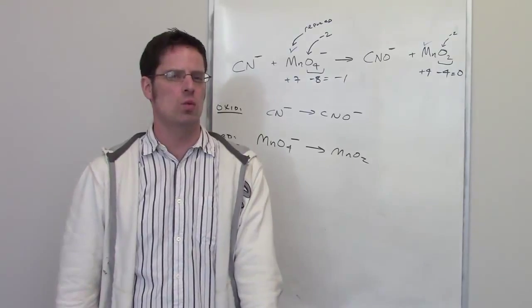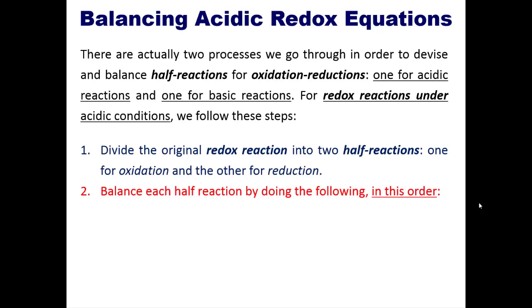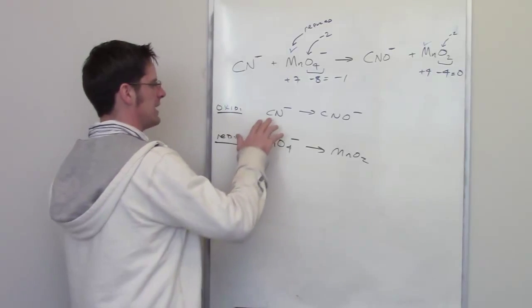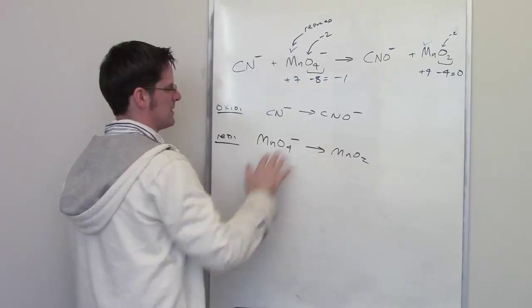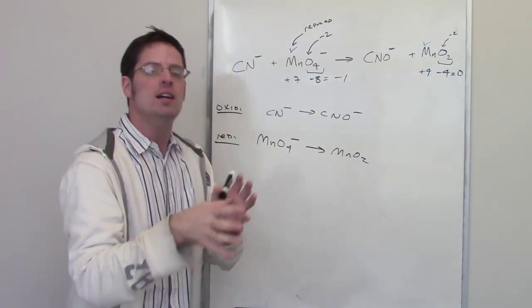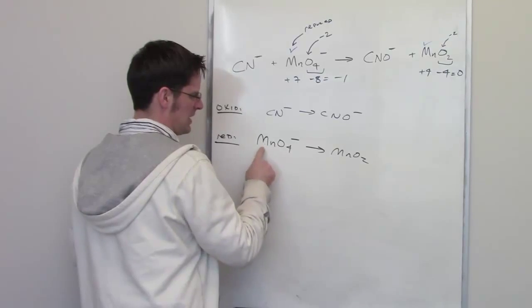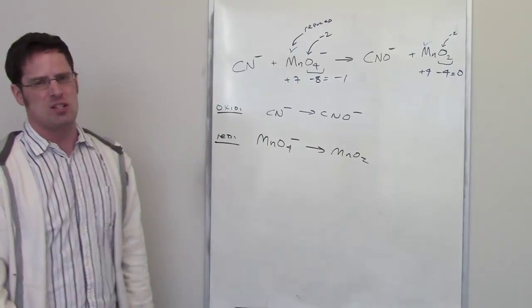Now let's look at step two: balance each half-reaction. The first sub-step says balance elements other than hydrogen and oxygen. Looking at the cyanide half-reaction, I've got carbon and nitrogen — they are balanced. Looking at the manganese half-reaction, I've got one manganese on each side — also balanced. So that step is pretty much done.